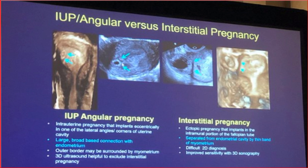3D ultrasound is helpful to exclude interstitial pregnancy. Interstitial pregnancy implants in the intramural portion of the fallopian tube, separated from the endometrial cavity by a thin band of myometrium. It is difficult to diagnose on 2D; 3D sonography improves sensitivity.